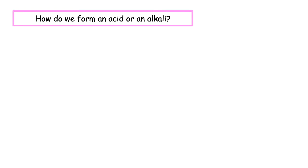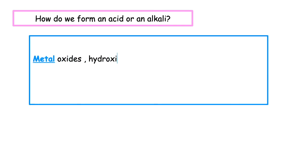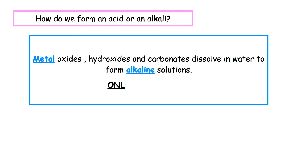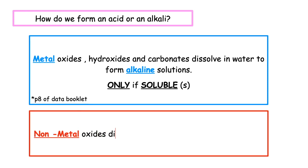So how do we actually form an acid or an alkali? Metal oxides, hydroxides, and carbonates dissolve in water to form alkaline solutions — but only if they're soluble, which is represented by the letter S on page 8 of your chemistry data booklet. Non-metal oxides dissolve in water to form acidic solutions. You need to know this for your exam.